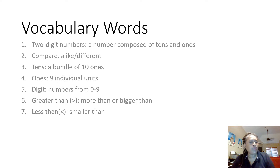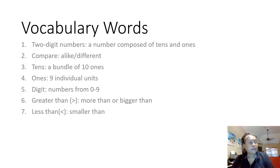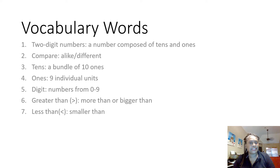You have nine individual units before you make a ten. So zero through nine is used to record ones. Once you get to that tenth individual unit, you have a ten. Digit are numerals from zero to nine. Greater than is a symbol that means more than or bigger than. Less than is a symbol that means one number is smaller than another number.